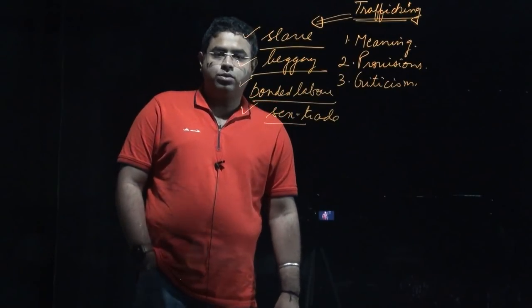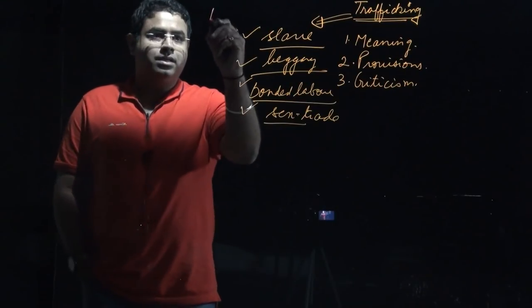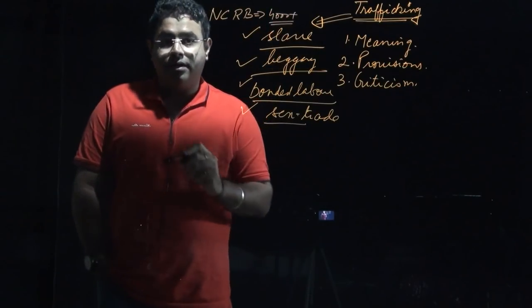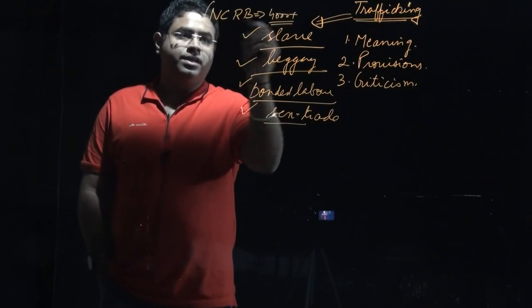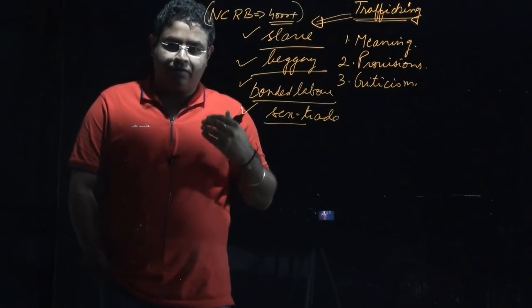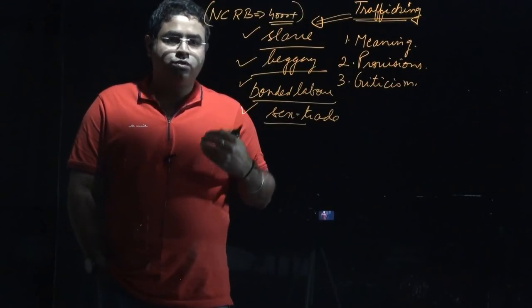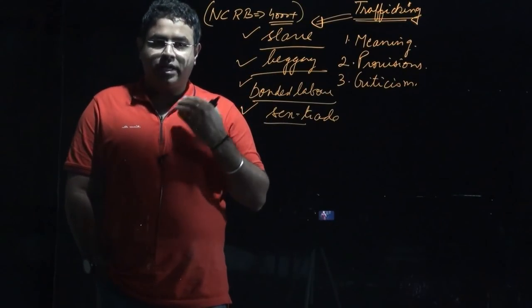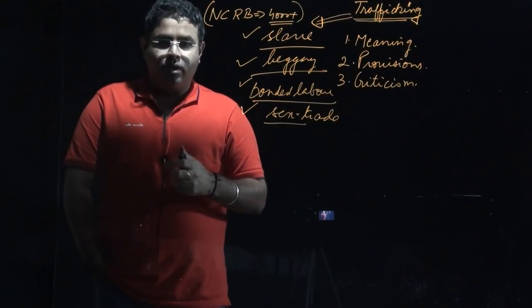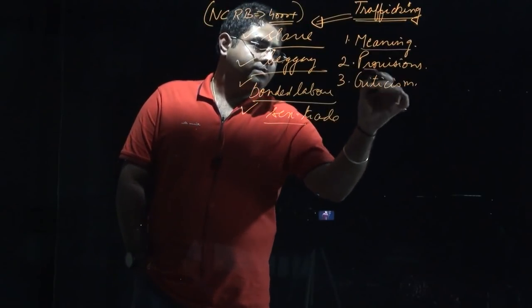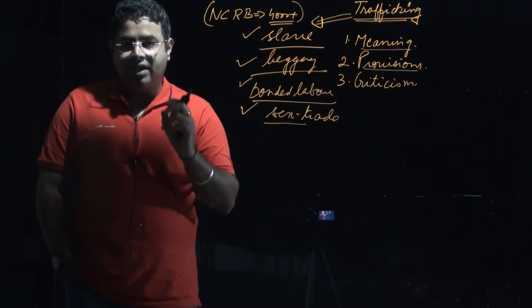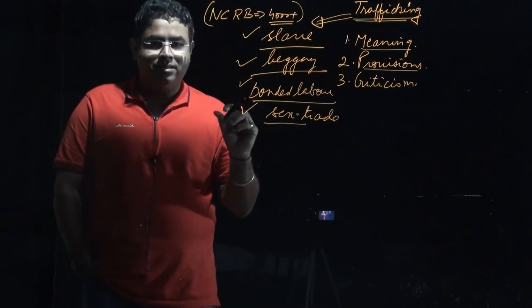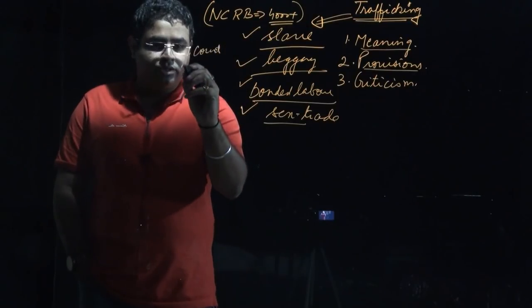When it comes to the trafficking issue, as per National Crime Record Bureau, about 4000 plus matters are unearthed every year. How can these issues be tackled? The government is introducing a new bill. In this bill, the government has introduced fast-track courts if someone will be indulging in trafficking.